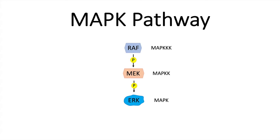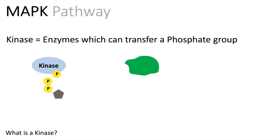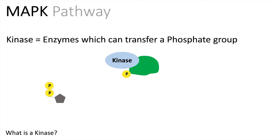All three proteins mentioned here are kinases. A kinase, to make it short, is an enzyme which can transfer a phosphate group. The kinase will transfer a phosphate from a donor — which can be ATP, for example — and then phosphorylate an acceptor protein.